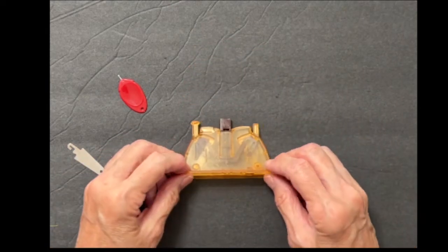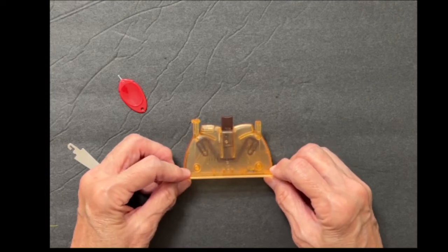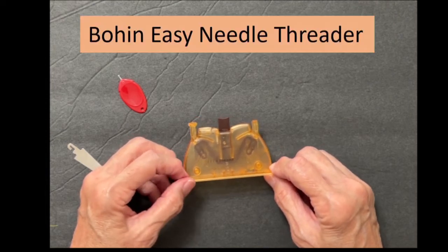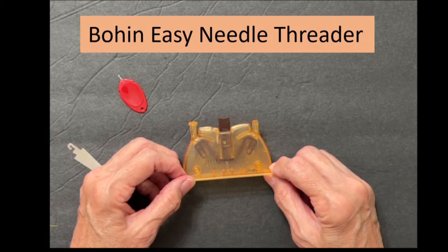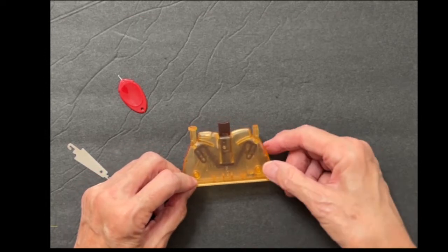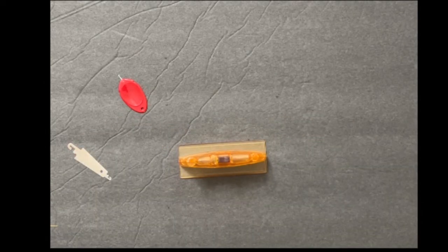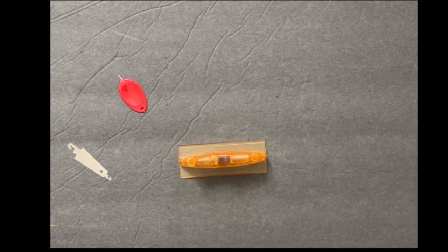The first one I want to show you is the Bowen Easy Needle Threader. I first heard about this from Becky Goldsmith. She's with Piece of Cake Designs and I believe they're selling them on their website. You might check that out. It is designed to sit on a table.